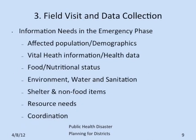Three: field visit and data collection. Information needs in the emergency phase include affected population and demographics, vital information and health data, food and nutritional status, environment, water and sanitation, shelter and non-food items, and resource needs and coordination.